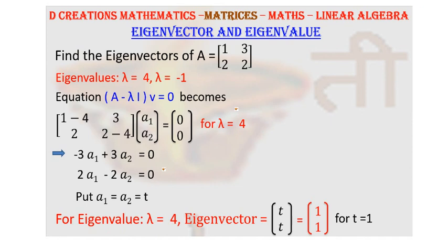The equation (A minus lambda I)v is equal to 0 is going to become in this manner because we are going to substitute lambda as 4. So this is 1 minus 4, this term is 2 minus 4 and of course, the non-diagonal entities remain unchanged because in an identity matrix, the non-diagonal entities are 0. So this is your first eigenvector a1, a2.